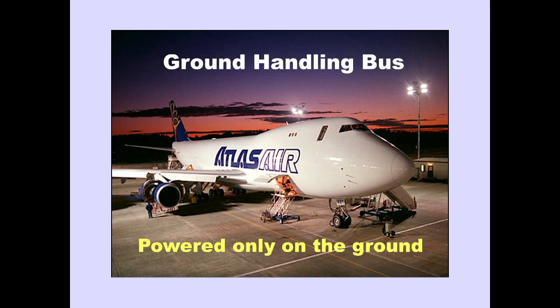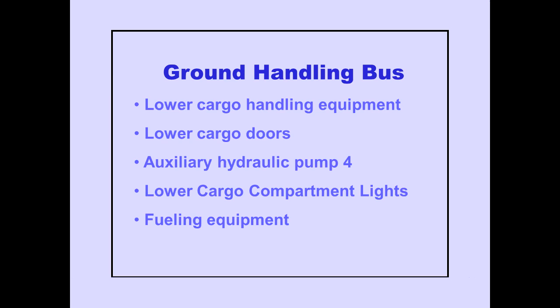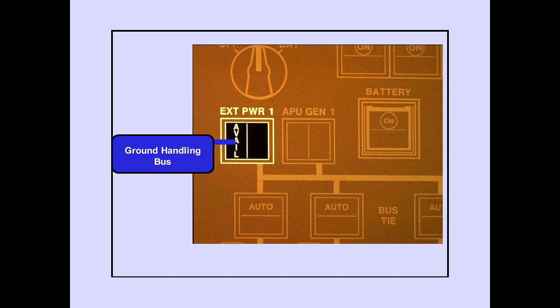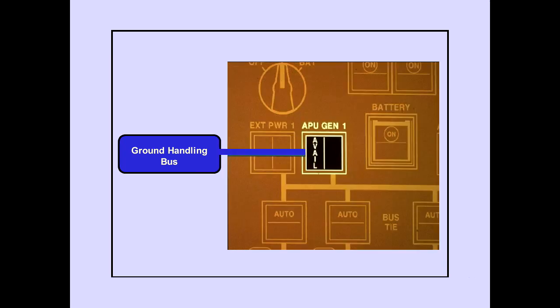Now let's discuss the ground handling bus. The ground handling bus is only powered when the airplane is on the ground. It provides power for lower cargo handling equipment, lower cargo doors, auxiliary hydraulic pump 4, lower cargo compartment lights, and fueling equipment. The ground handling bus is powered automatically when external power 1 is available. If external power 1 is not available, the ground handling bus is powered automatically by APU generator 1, if available.